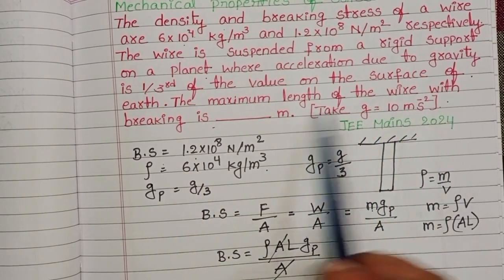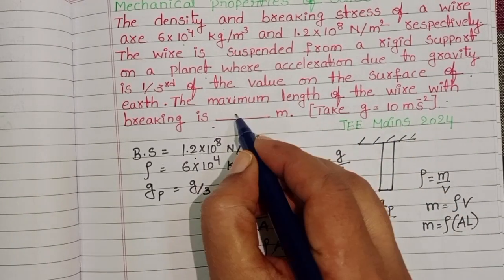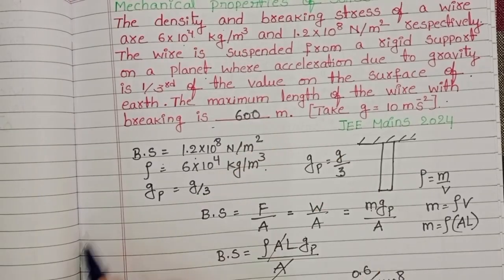The maximum length of the wire with breaking is 600 meters.